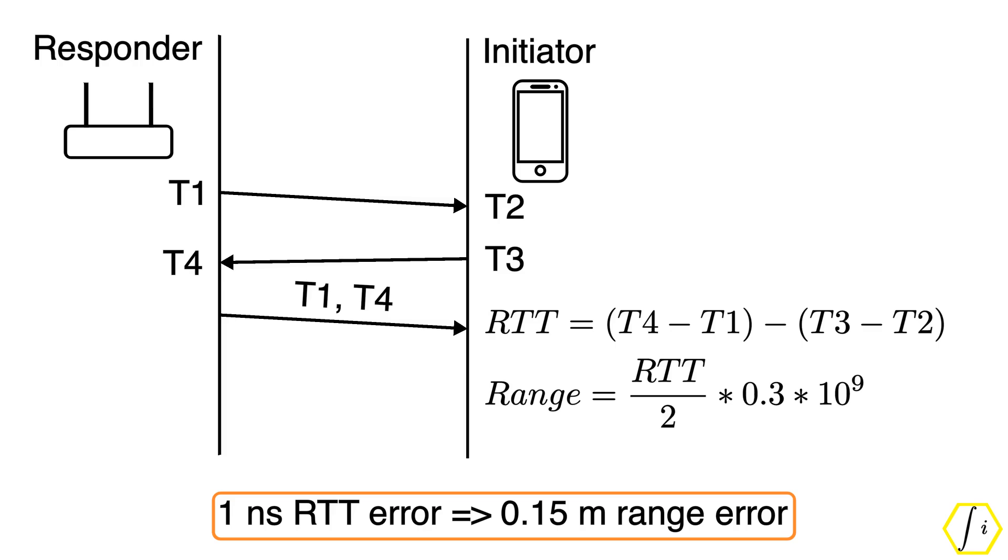With multipath, the receiver receives multiple delayed replicas of the same frame and this can really confuse a receiver regarding the exact time of arrival. This uncertainty in time of arrival is resolved in 11AZ using channel estimates obtained with an NDP frame.